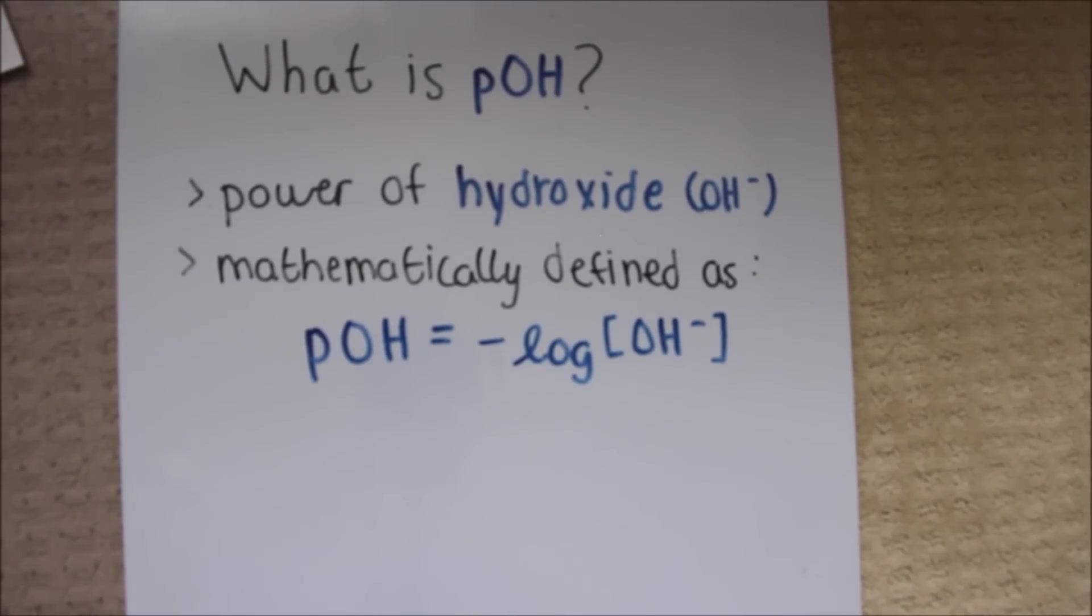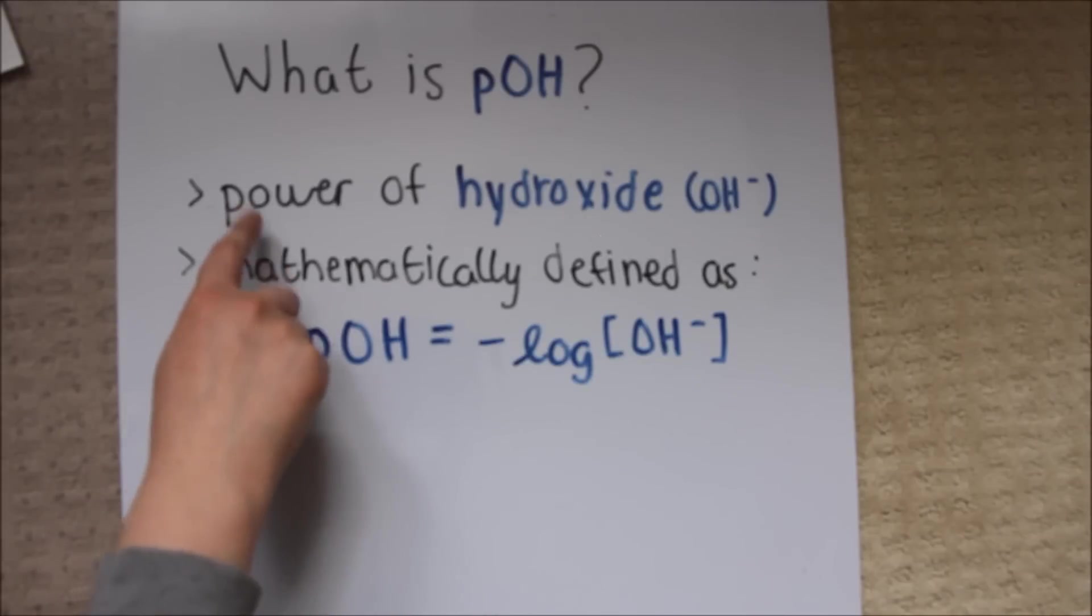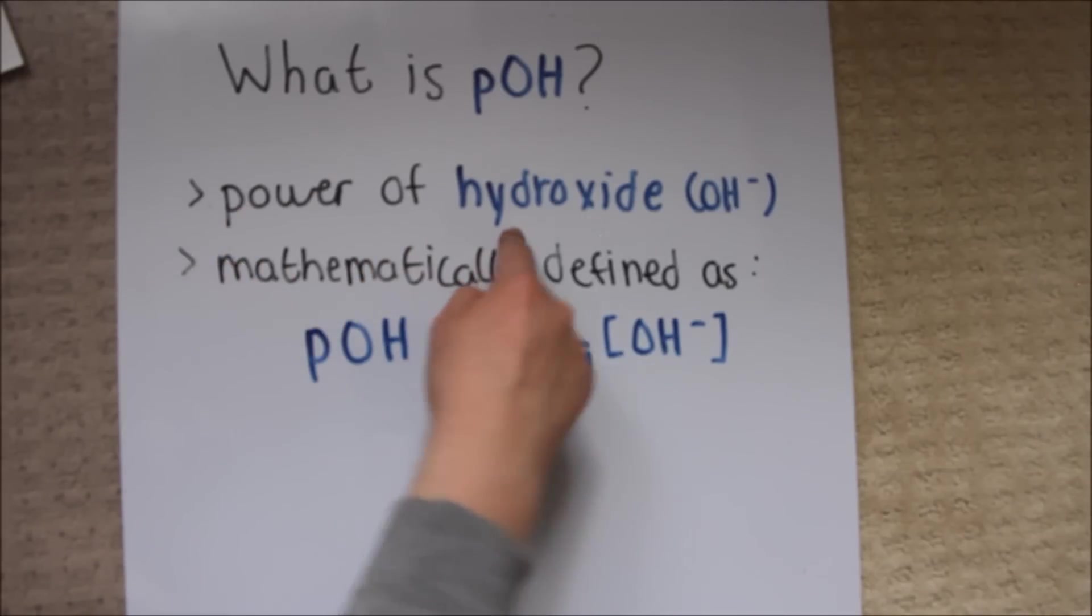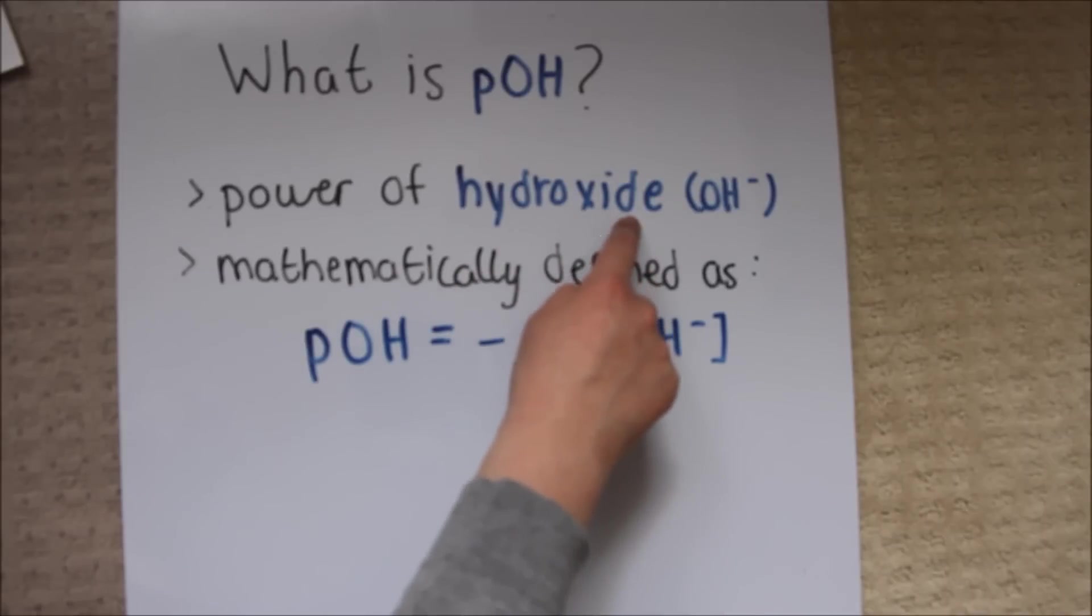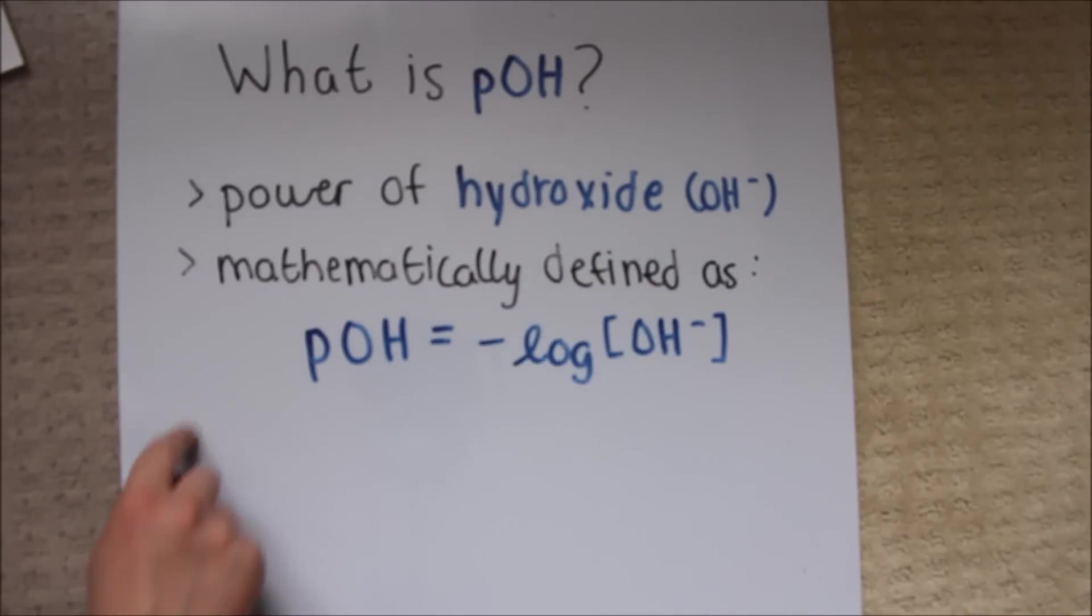What is pOH? pOH is very similar to pH, but it represents the power of hydroxide or OH-, which means the concentration of hydroxide ions in a solution. It is mathematically defined as pOH equals negative log OH-.